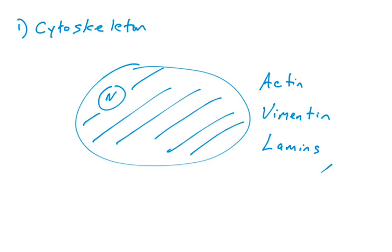You've heard of proteins such as actin, vimentin, lamins. These are proteins that help the cell maintain its shape, help the nucleus maintain its shape, organelles maintain their shape.